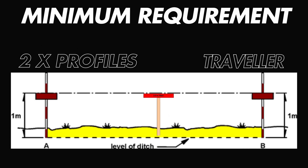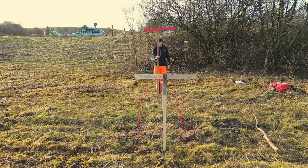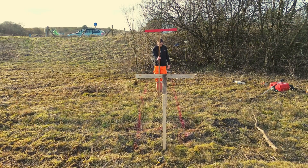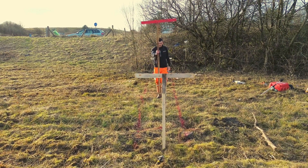When installing profile boards, as a minimum you will require two profiles and one traveller. The idea behind profile boards is to imitate the gradient of an excavation, and therefore you will need two visual guides that can be aligned with one depth gauge, which is known as the traveller.